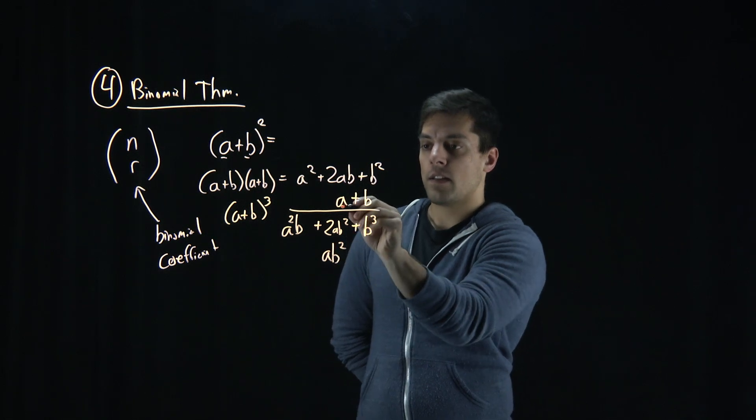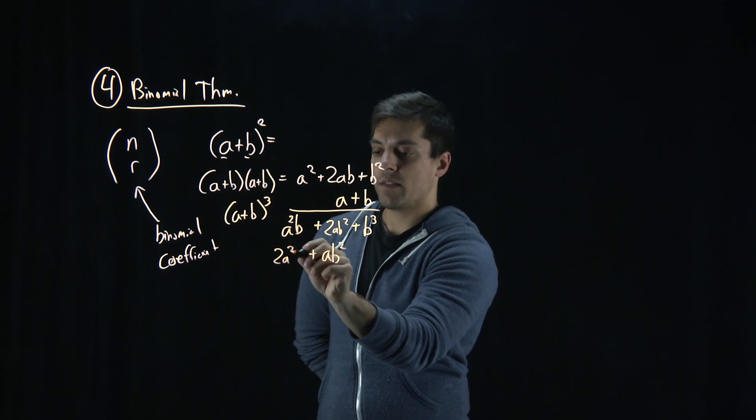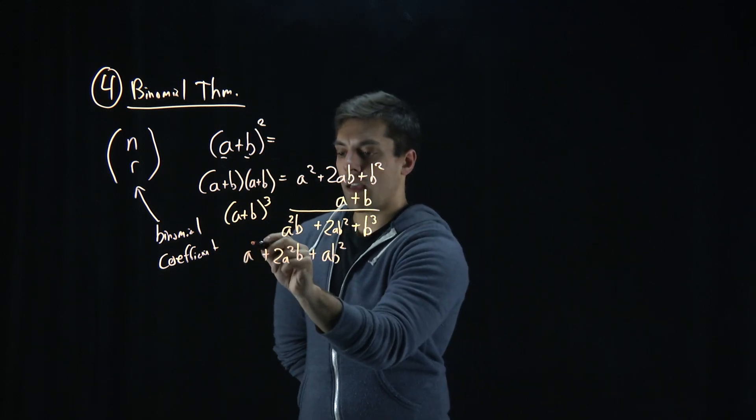a times b squared, a times 2ab, 2a squared b. And finally, a times a squared, a cubed.